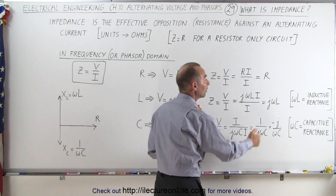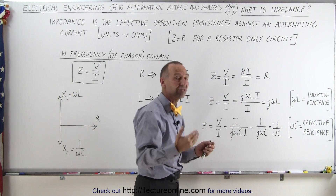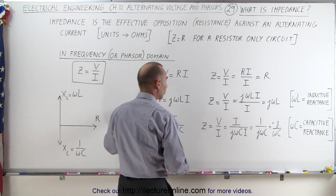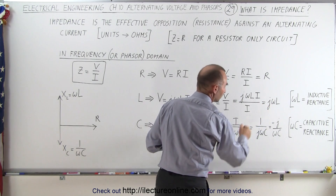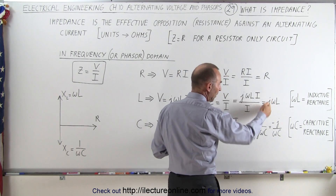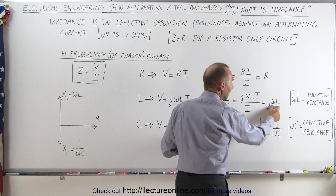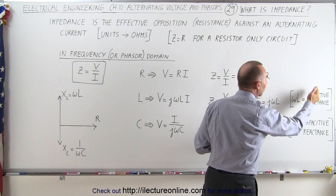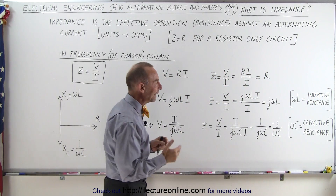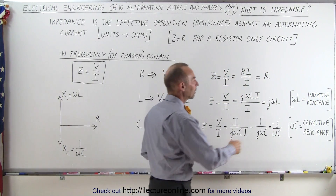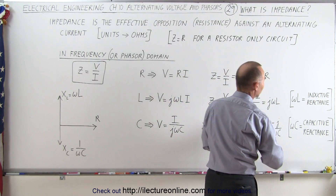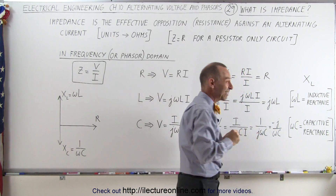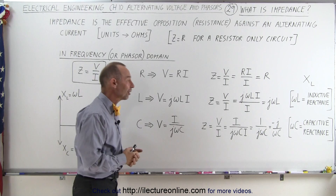Omega L is the magnitude of the impedance, and j gives you the phase difference. J gives you a positive 90 degrees, which means in inductors the voltage is ahead of the current — a positive 90-degree phase difference. Omega L, the magnitude of the impedance, is also defined as what we call the inductive reactance, the symbol for which is X sub L. So X sub L is the impedance of an inductor.